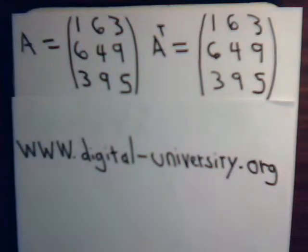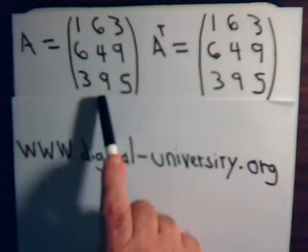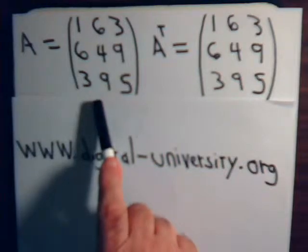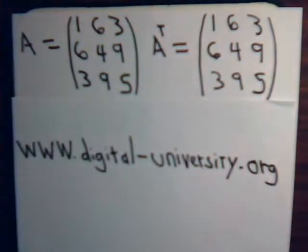In the previous video, we worked with symmetric matrices. They have the special property that if you have a matrix and then you take its transpose, you end up with the original matrix that you began with. So you have that symmetry. So these are symmetric matrices.